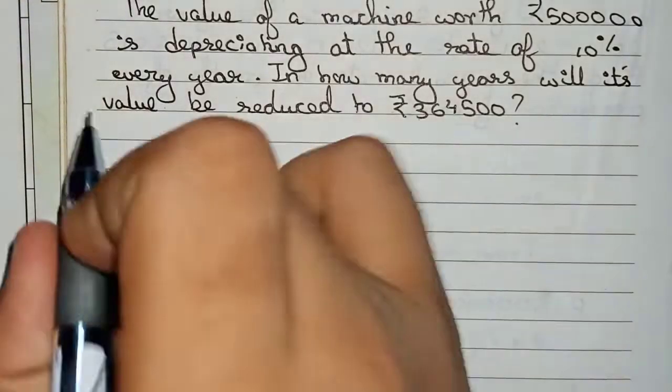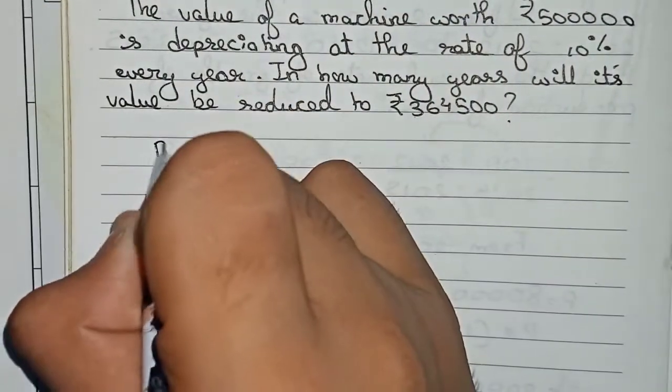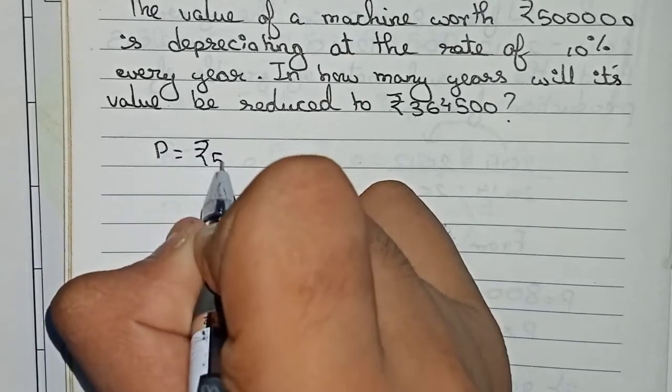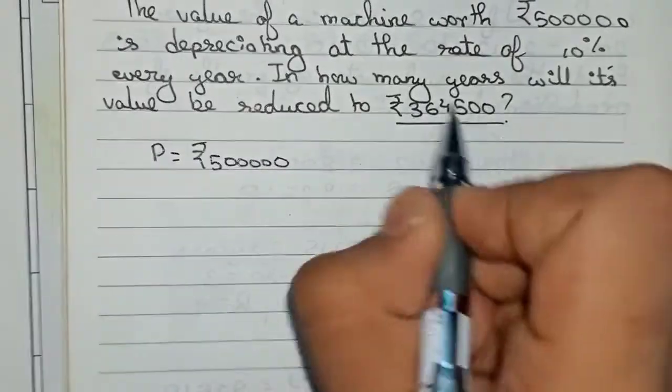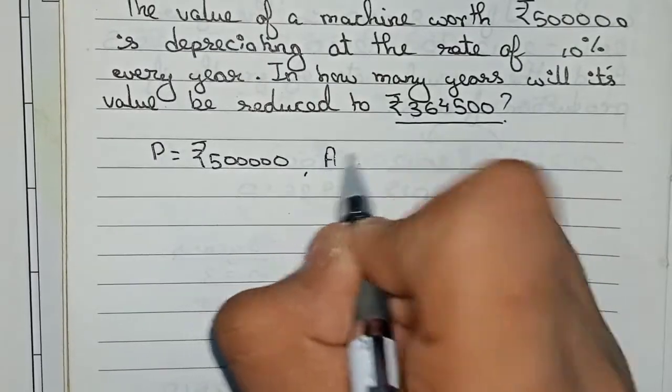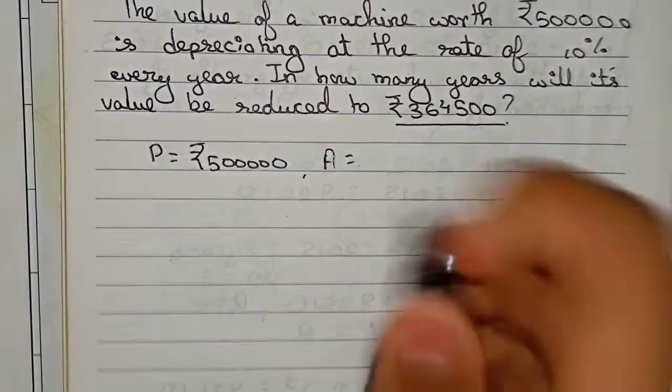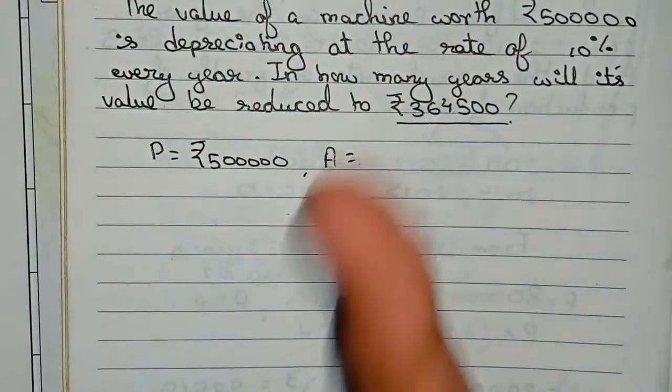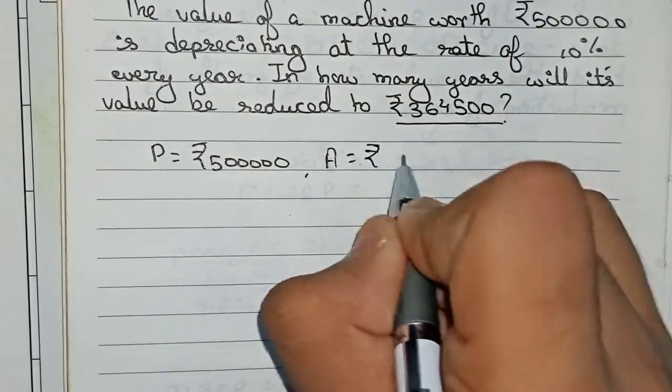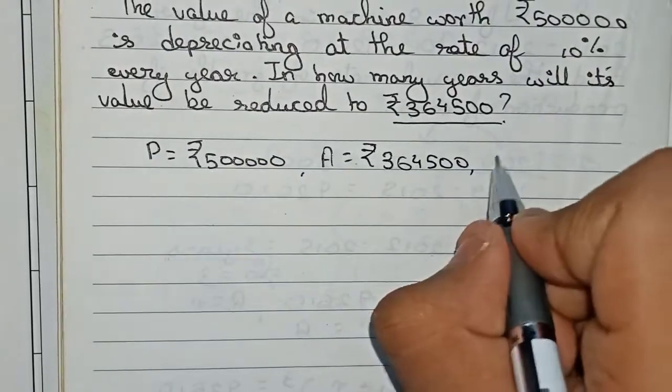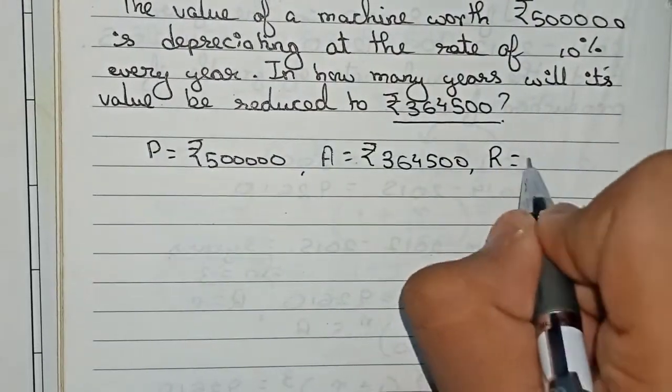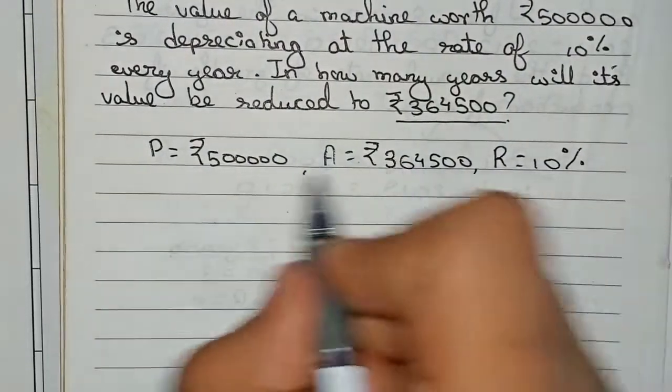First, I'll tell you the information that's been given. Our principal is rupees 5 lakh. Our amount is 3,64,500, which is the value of the price after the required number of years. The rate of depreciation is 10%, and the time is unknown, so we'll take time as n.